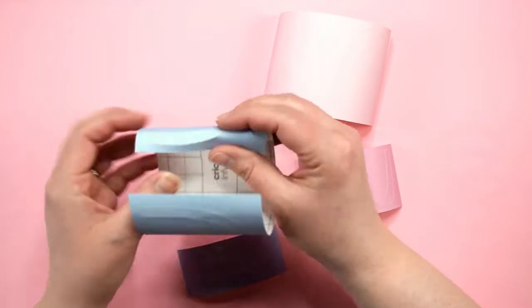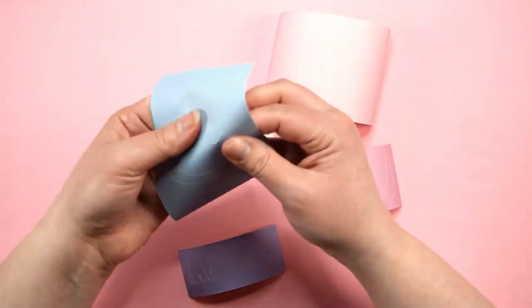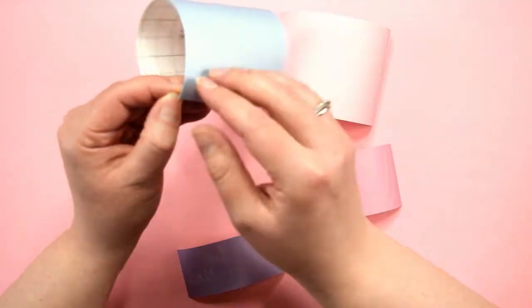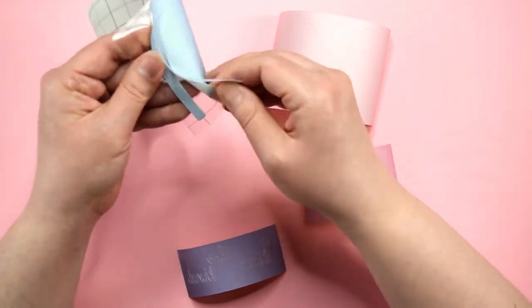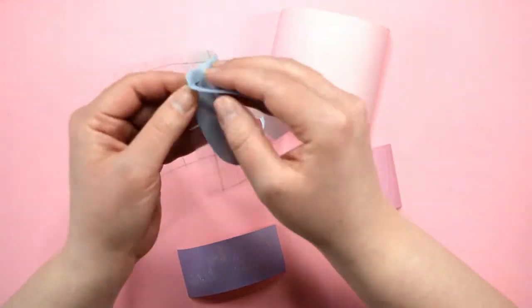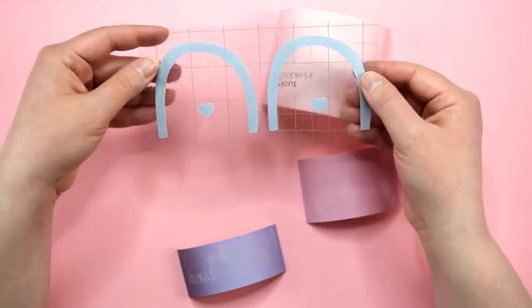If you have never weeded infusible ink before it is quite different from weeding other Cricut materials. The easiest way to weed infusible ink is to roll the ink sheet back and forth in your hands to loosen the cut parts of the material. Then you can peel away the bulk of the excess infusible ink. The first part of the design I am going to weed is the teal band on the rainbow and the heart.